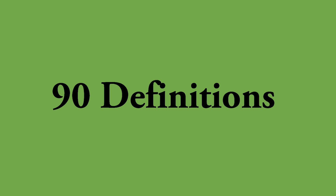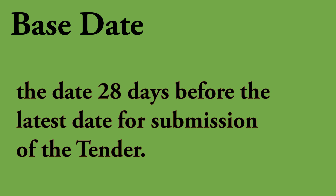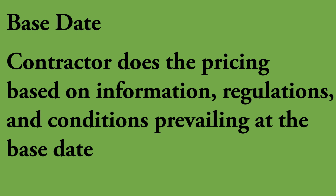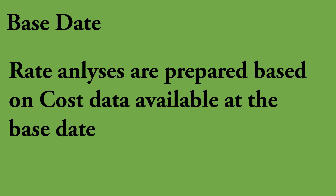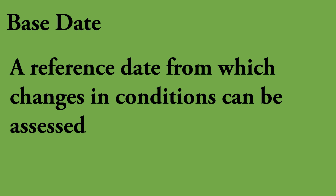There are 90 definitions altogether, so I'm not going to describe one by one, and I will skip the straightforward ones. Let's start with 'base date', since we will be discussing Advance Payment Certificate and Guarantee under clause 14. Base date is the date 28 days prior to the latest tender submission date. If the tender submission date is extended, then the base date automatically changes accordingly. This base date is vital because the contractor shall do the pricing by considering the information, regulations, and conditions prevailing at the base date. The rate analysis for the project is also prepared with cost data available at the time of the base date. So the base date is generally used as a mechanism for the allocation of risk between employer and contractor for changes that might occur during the period between the contractor pricing the tender and the signing of the contract. In general, a base date is a reference date from which changes in conditions can be assessed.